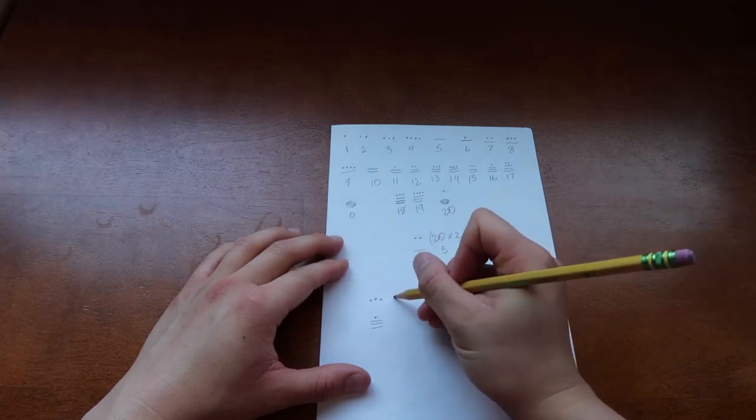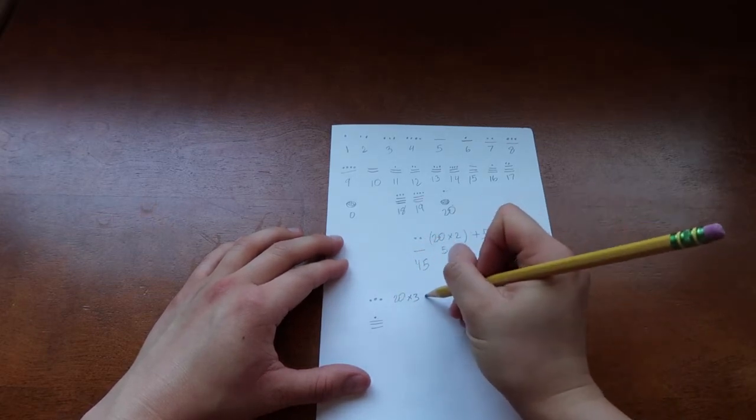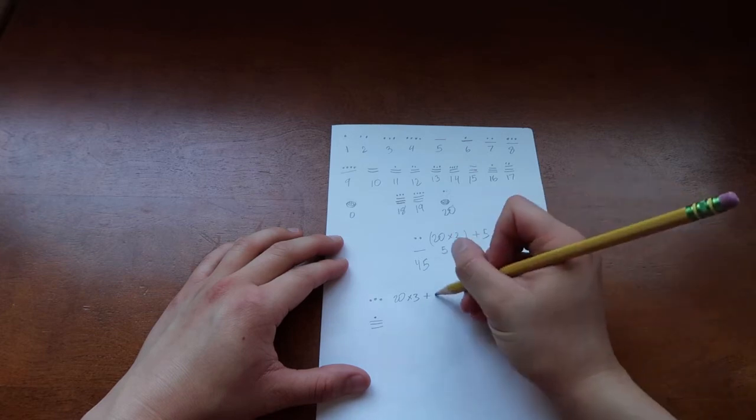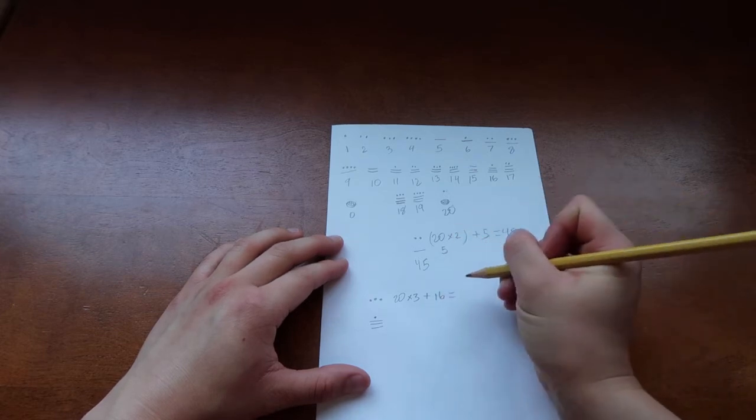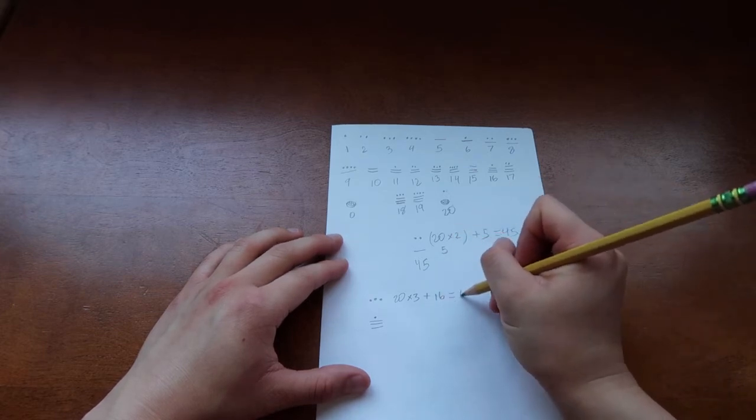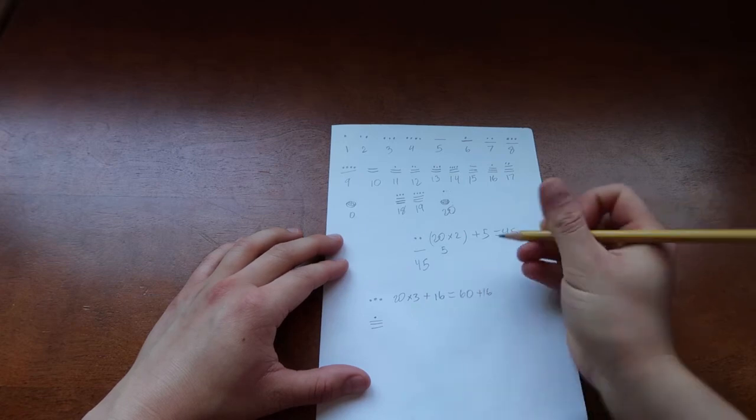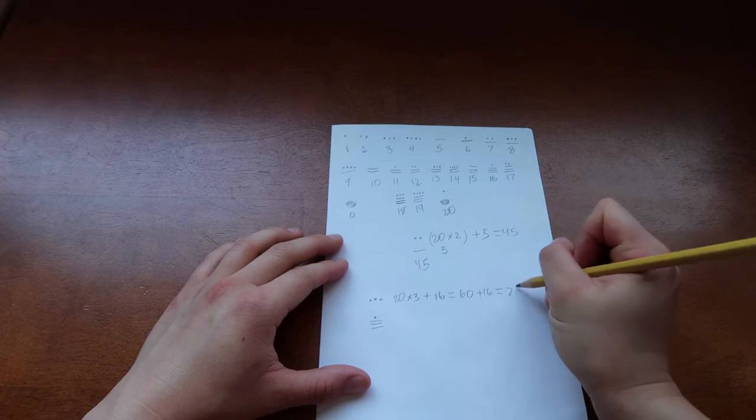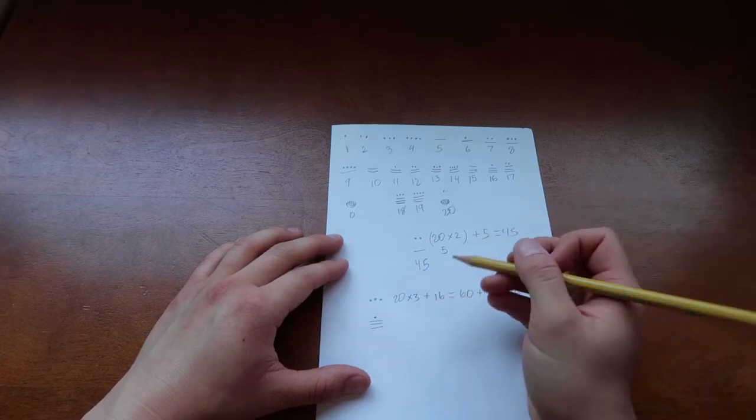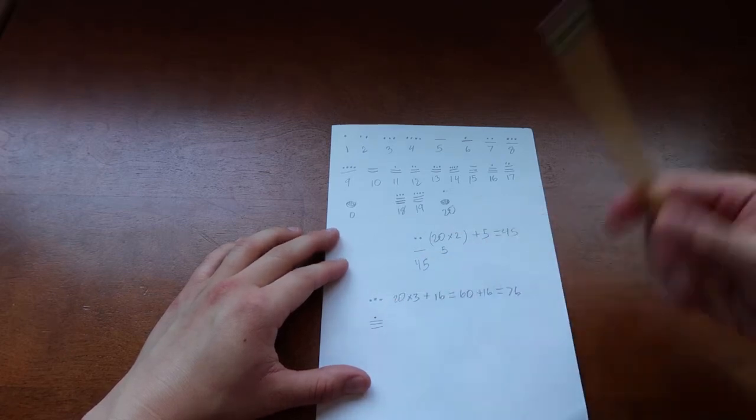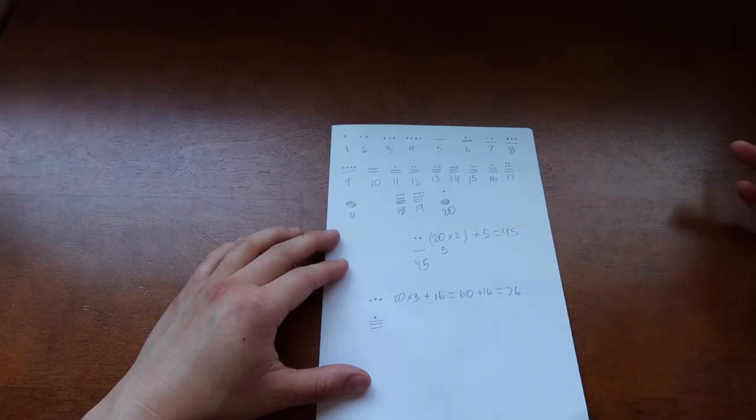So 20 times 3 plus 16. And we get 60 plus 16 equals 76. So this is the Mayans' representation of the number 76.